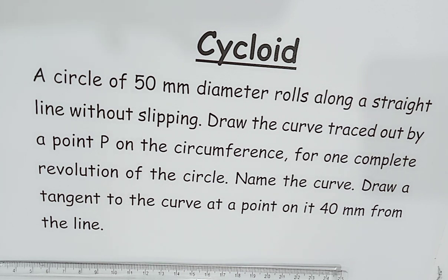Cycloidal curves are generated by a point lying on the circumference of a circle when it rolls along a straight line without slipping. Now we will solve the problem. The diameter of the circle is 50 mm, so we will take 25 mm as the radius.